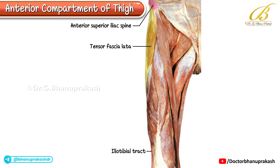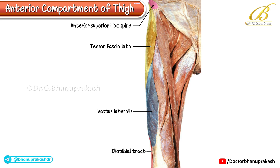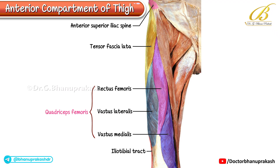Next, the bulk of the anterior compartment is formed by the quadriceps femoris, consisting of three superficial muscles: laterally the vastus lateralis, in the middle the rectus femoris, and medially the vastus medialis. Running obliquely from the anterior superior iliac spine towards the medial side of the thigh is the long, strap-like sartorius muscle.